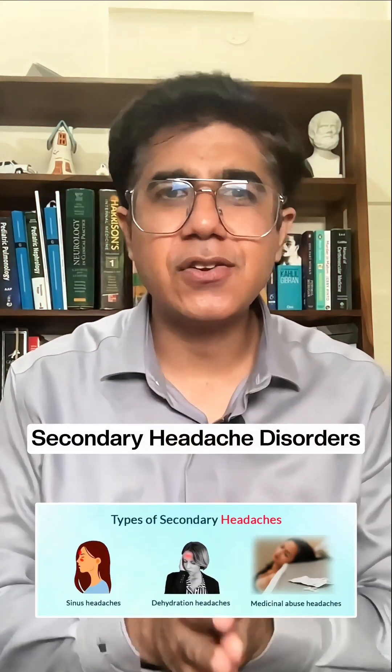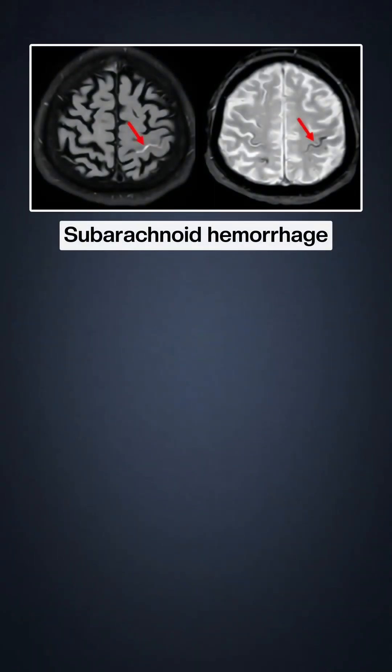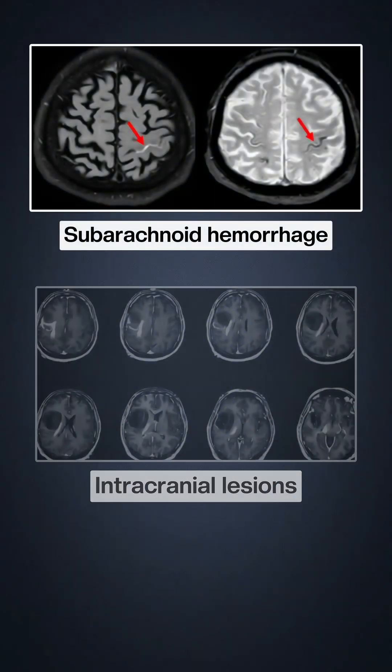Next, we have secondary headache disorders which are due to an underlying etiology like subarachnoid hemorrhage or any intracranial lesion — mass lesions like neurocysticercosis, tumor, granuloma, tuberculoma — then CVST, cerebral venous sinus thrombosis. There could be a plethora of causes for secondary headache disorders.